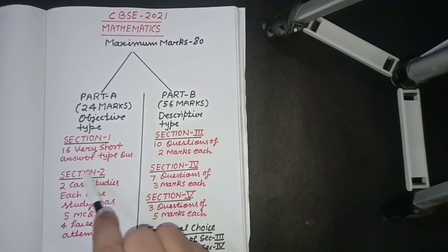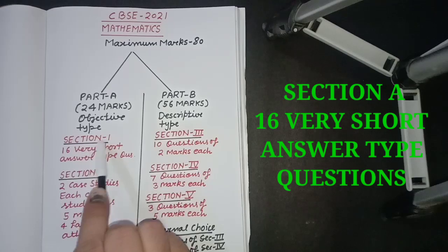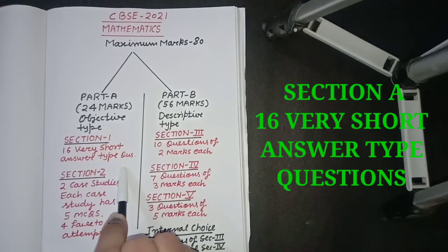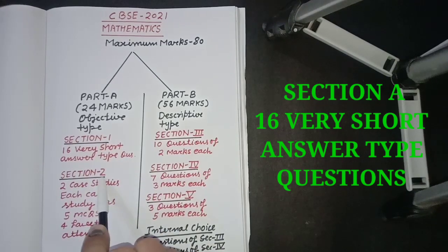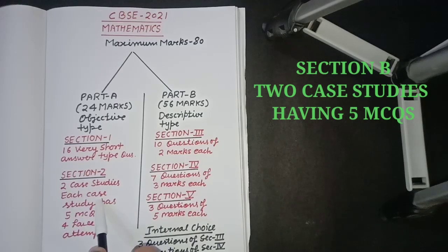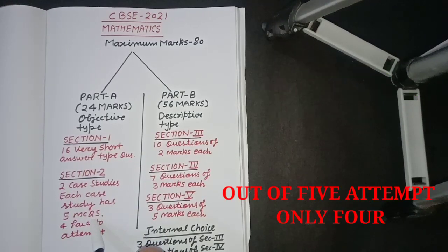In Section 1, 16 very short answer type questions will be there. In Section 2, two case studies will be there which will consist of five MCQs each, in which you have to attempt any four questions.